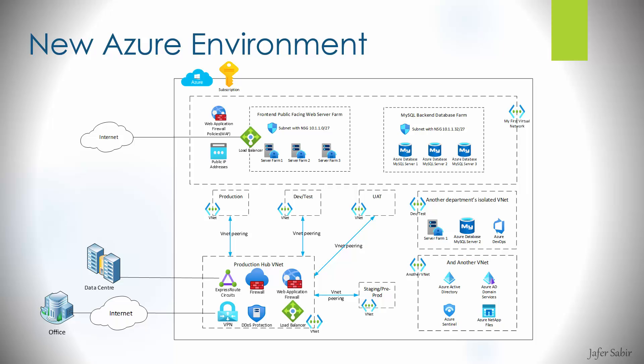There are also isolated VNets that have no connection to the hub-and-spoke environment at all. These are needed by departments within the company that have their own services and want to administer their own VNets — carving their own subnets, creating their own services. From a management perspective, we can give them dedicated VNets with full management rights, which is another use case for creating isolated VNets.